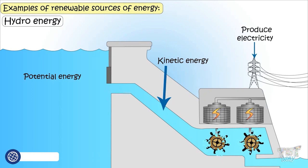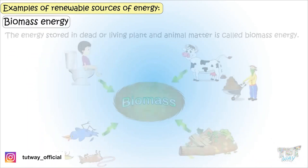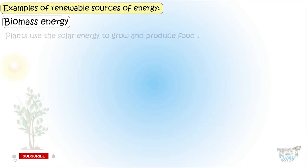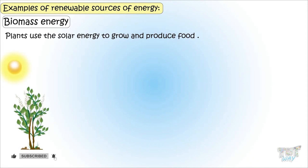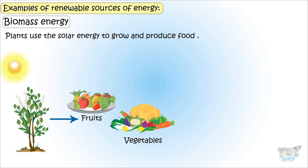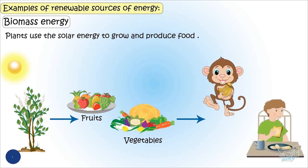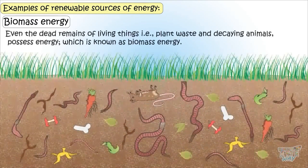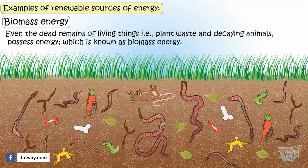Next is biomass energy — the energy stored in dead or living plant and animal matter. Plants use solar energy to grow and produce fruit, and these fruits and vegetables all store energy. This energy is transferred to those who eat it — animals or humans. So energy is stored in all living organisms, living or once living, and even the dead remains of once-living things possess energy.